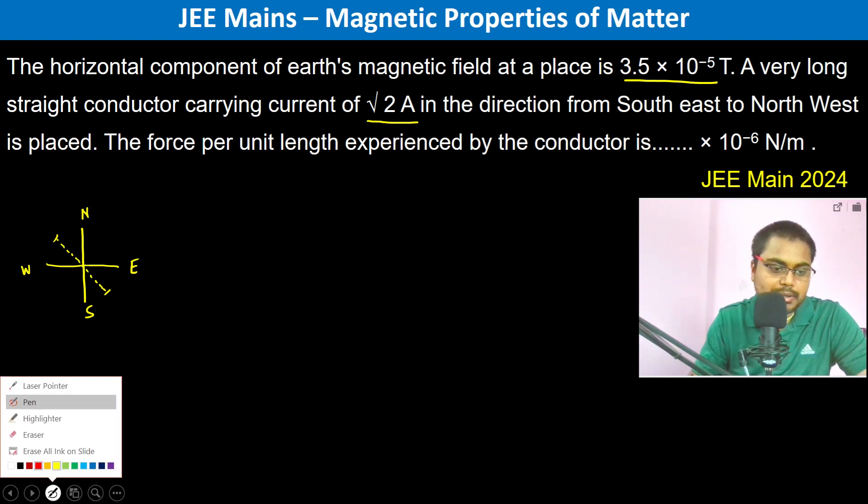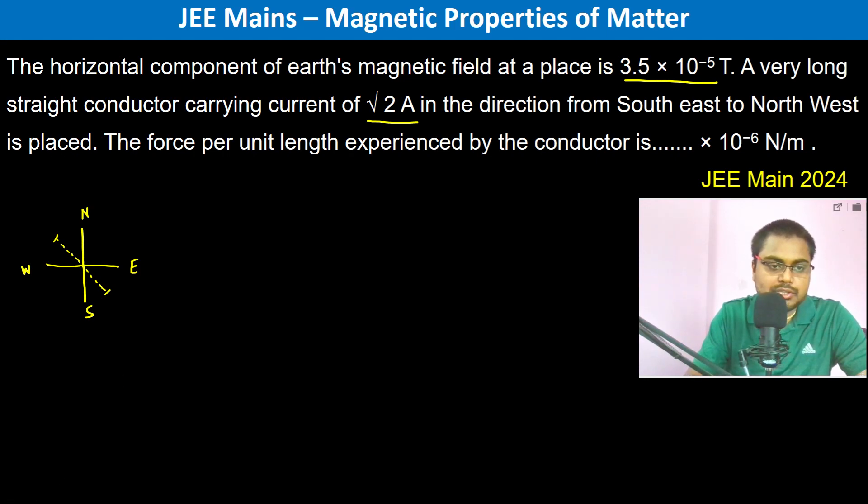Earth's magnetic field is such that the geographical north is earth's magnetic south pole, and this is the magnetic north pole. So therefore the magnetic field is in this direction.